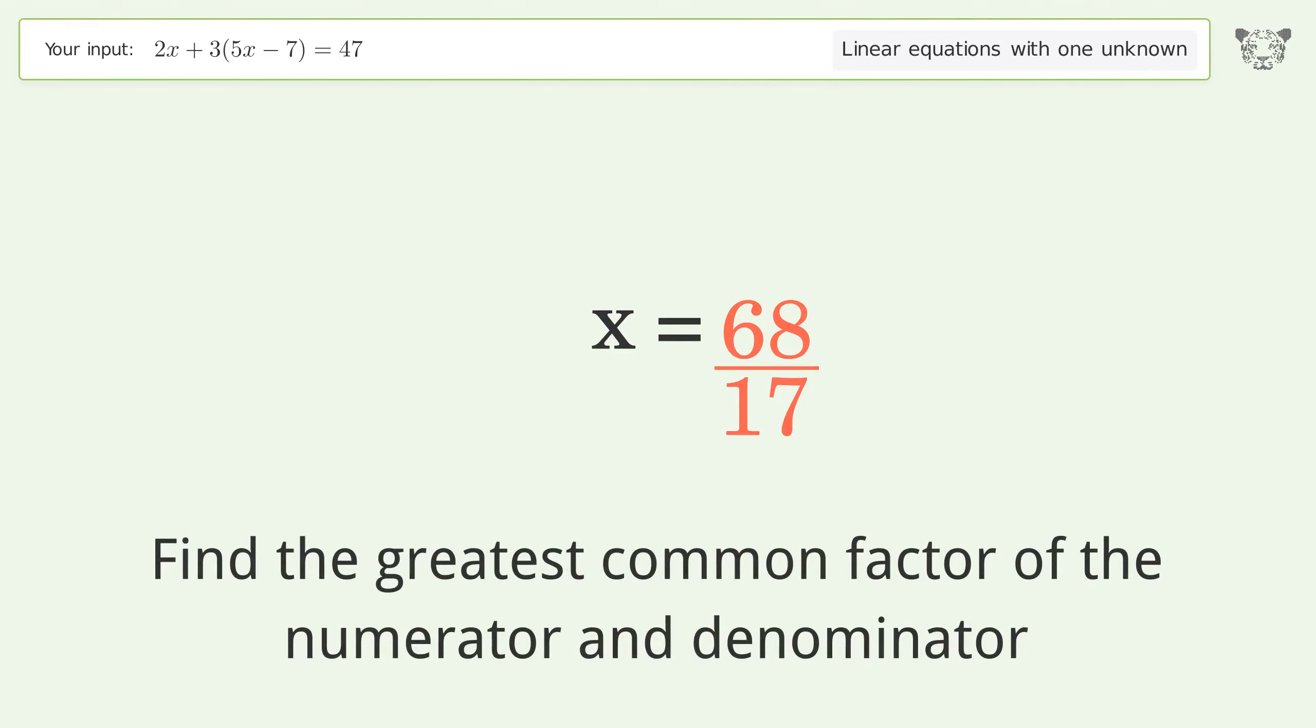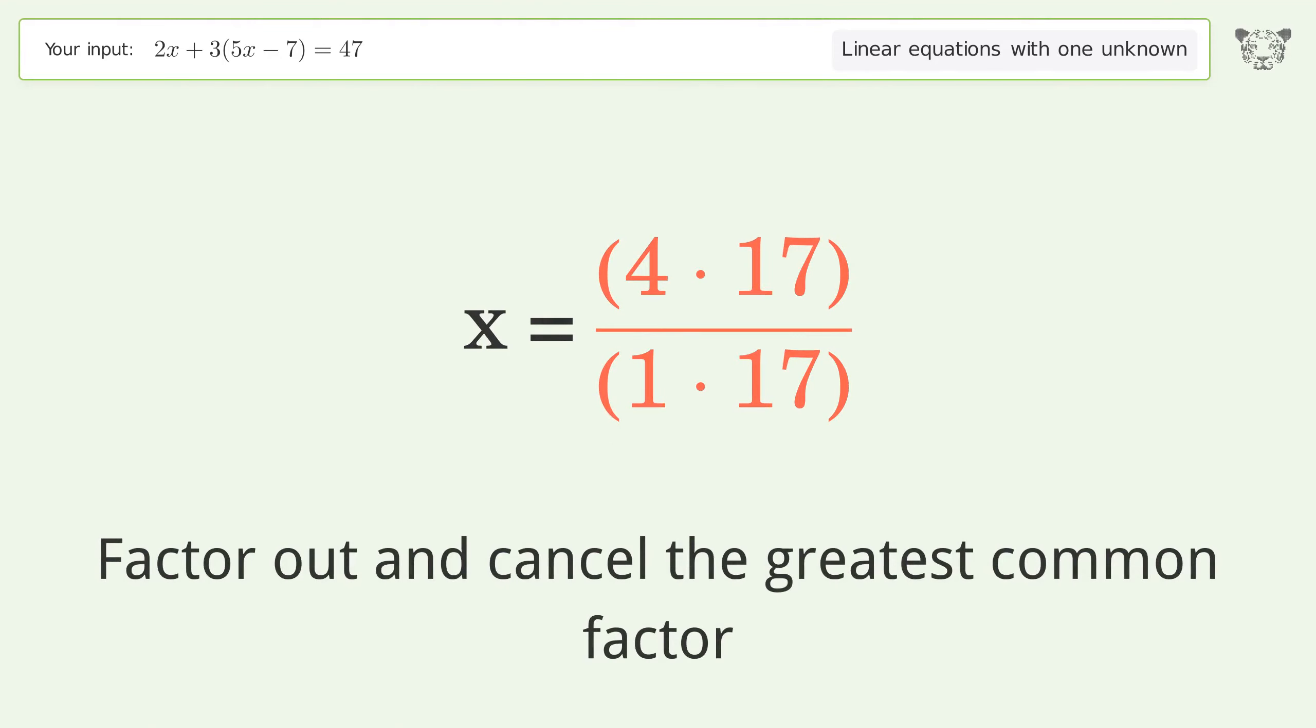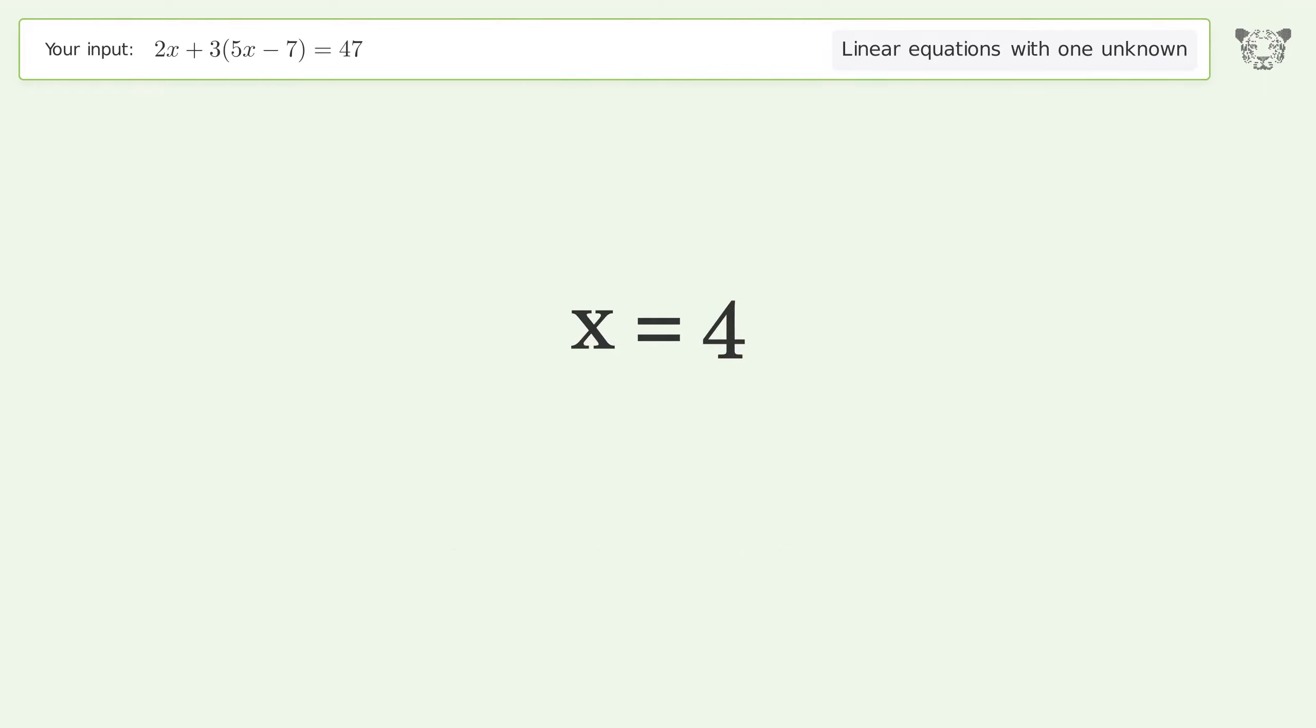Find the greatest common factor of the numerator and denominator. Factor out and cancel the greatest common factor. And so the final result is x equals 4.